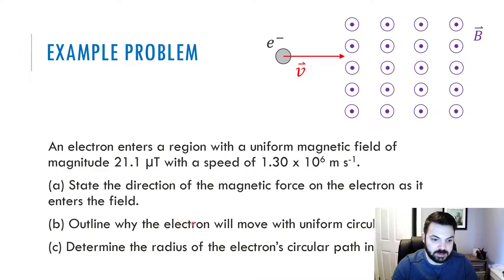For B, outline why the electron will move with uniform circular motion. Think about this one too. Think about what the rules are, the conditions for circular motion. So you can go ahead and pause again, try and think that over. How do we define circular motion?